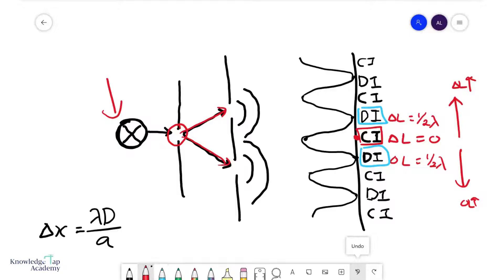And then you move up some more, you'll reach a point where the path length is one lambda, and then you form a maximum again. So you get CIs, and this is what we call the first order maximum. This will go on for quite a bit.